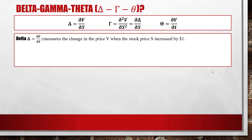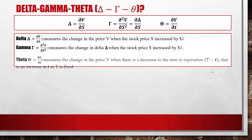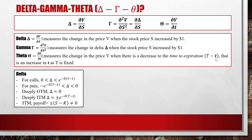Delta equals the partial differential of V with respect to S — it measures the change in price V when the stock price S increases by one dollar. Gamma measures the change in Delta when the stock price S increases by one dollar. Theta measures the change in the price V when there is a decrease in the time to expiration — an increase in t, as capital T is fixed. Capital T is the duration length of the derivative, so the time to expiration is the distance between capital T and little t.